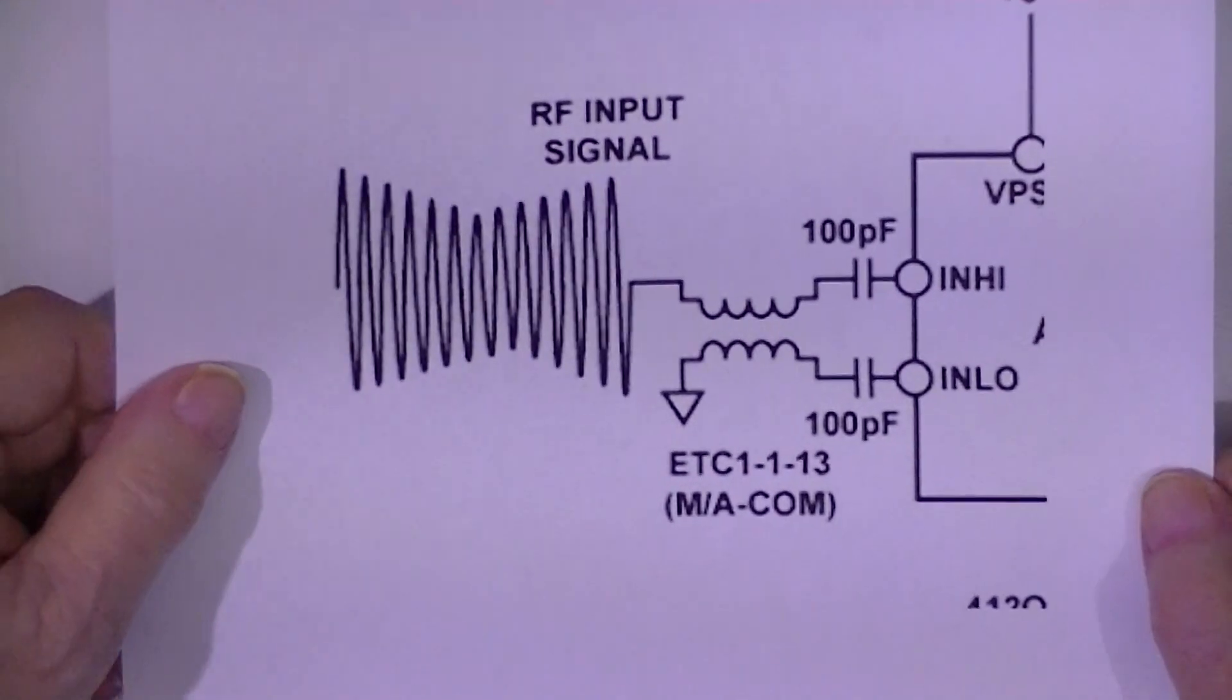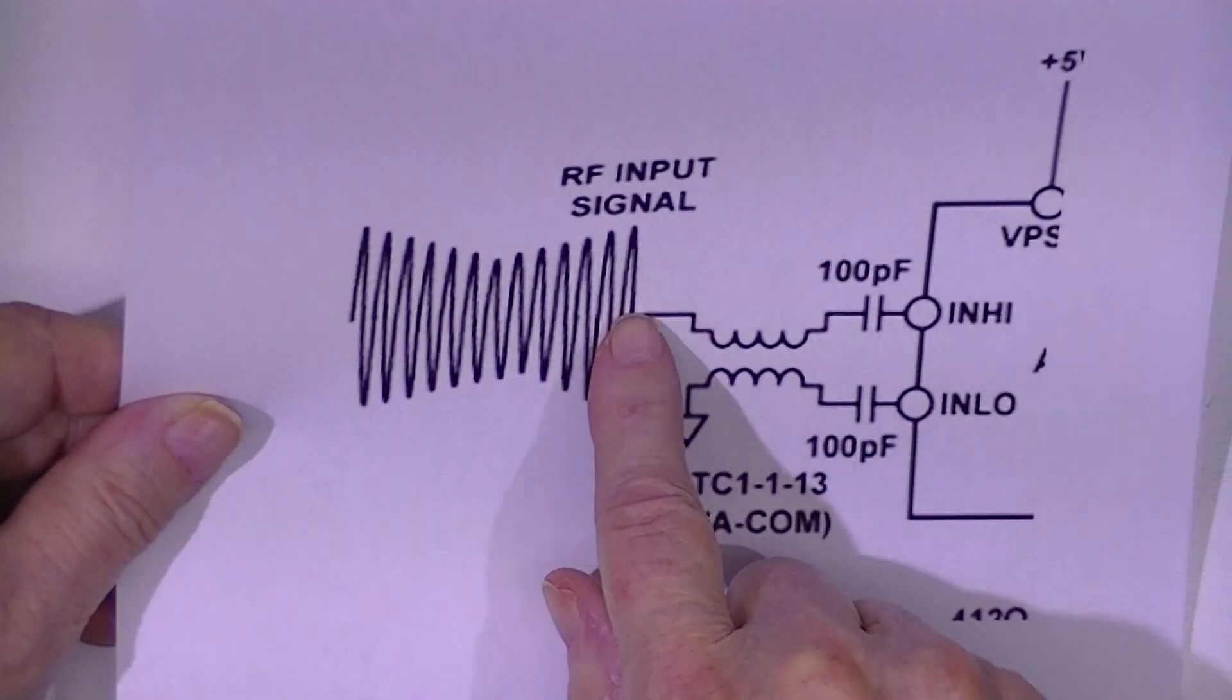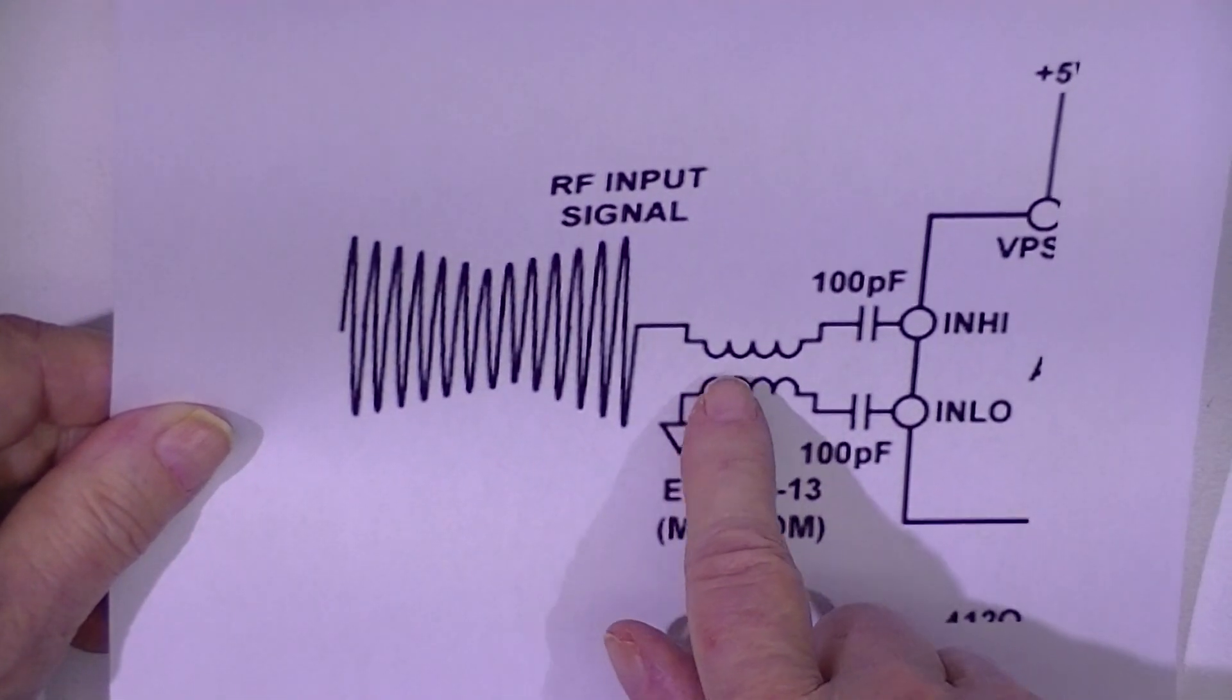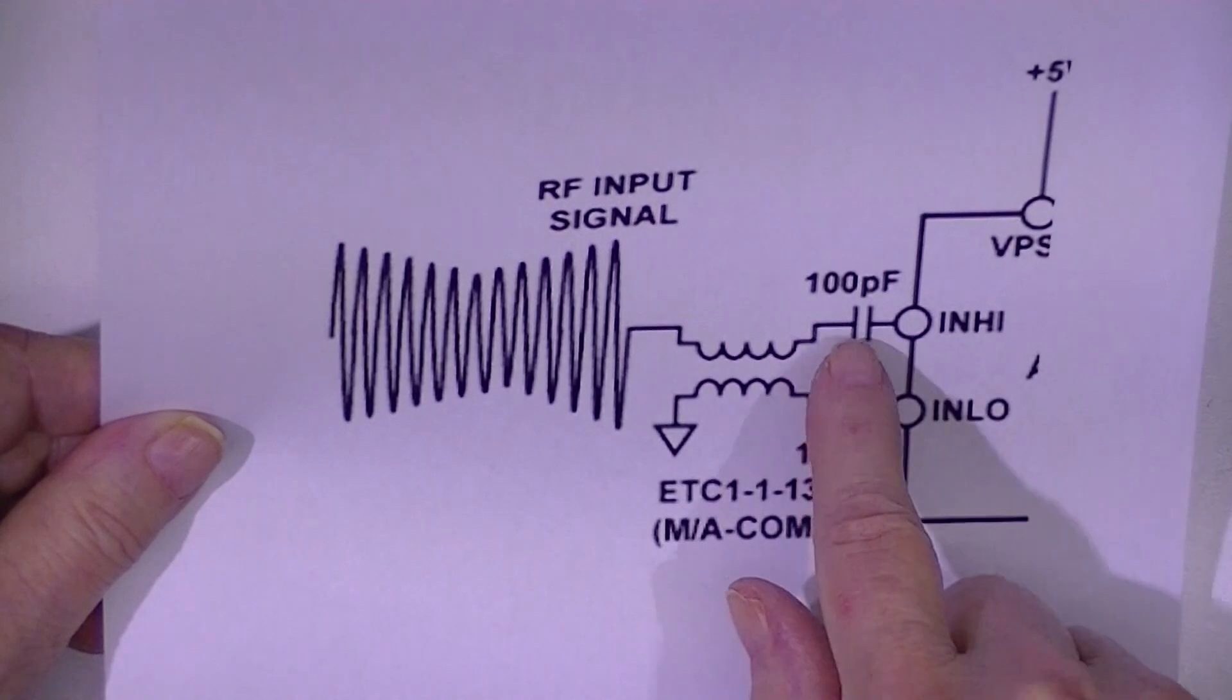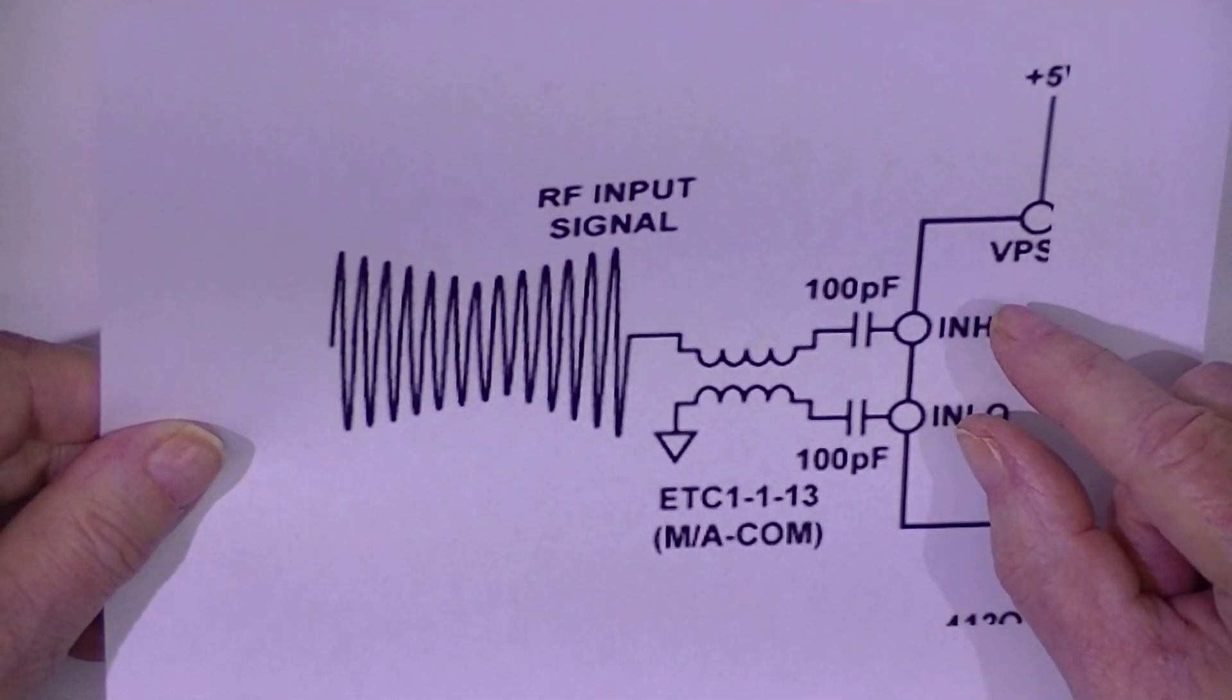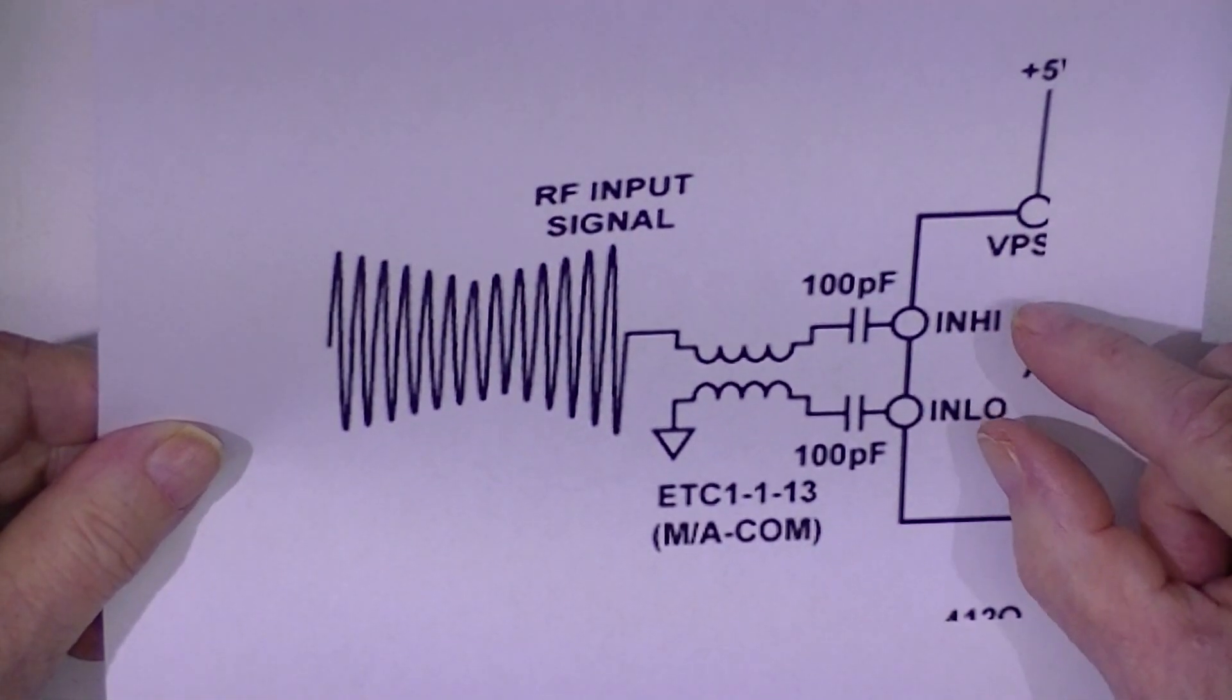So I traced out the front end circuitry. It looks like this, where this is the coaxial input. This is a very small transformer. And these are two capacitors. And then it appears that this thing has a balanced high and low input.